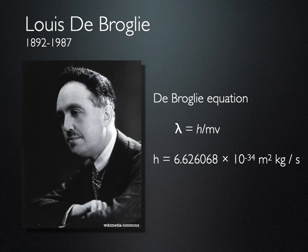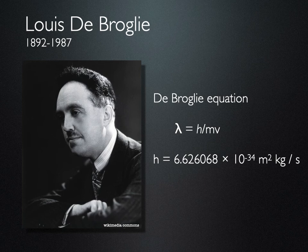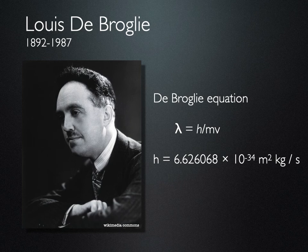The de Broglie equation says that the wavelength associated with any particle in motion is Planck's constant divided by that particle's mass and its velocity. So we could think about an electron moving through the double slit experiment — if we know the mass and velocity of that electron, we can find its associated wavelength and predict the light-dark-light-dark interference pattern. Planck's constant, which we've talked about before, is 6.626 times 10 to the negative 34th, usually given as joules times seconds.